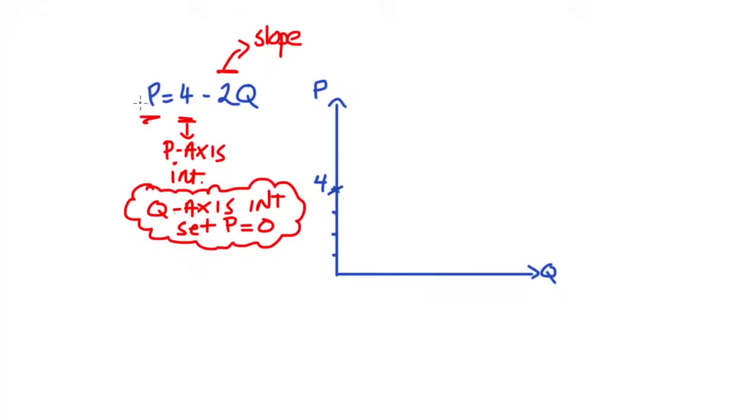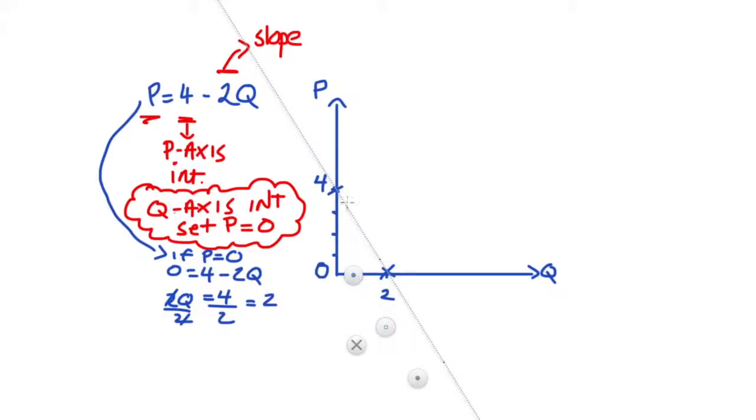So what we're going to do is substitute P = 0 into the demand function. I'll go back to blue for working out, and I get 0 = 4 - 2Q. So we add 2Q to both sides to get 2Q = 4. Now divide both sides by 2, and we get Q = 2. So we have two intercepts. We only need two points to get a straight line, so we can just join these two intercept points together and that's our demand curve.